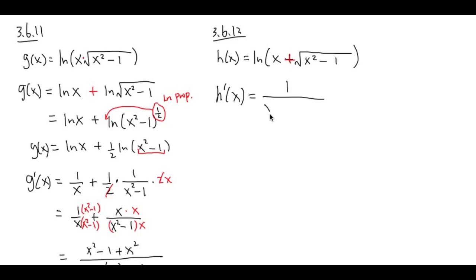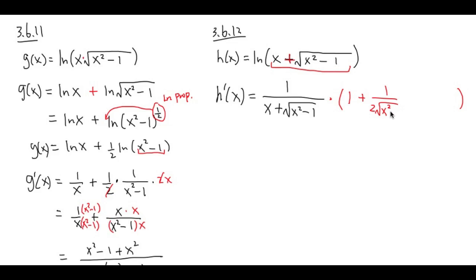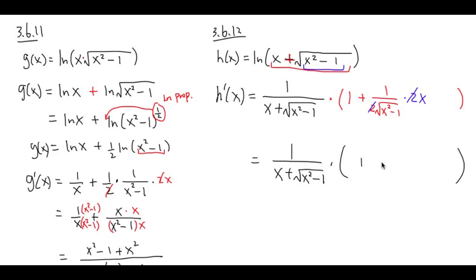The derivative of ln of x plus square root of x squared minus 1 is 1 over (x plus square root of x squared minus 1), multiplied by the derivative of the inside function. Derivative of x is 1, plus the derivative of the square root of x squared minus 1, which is 1/2 times (x squared minus 1) to the negative 1/2, times 2x. The 2's cancel, giving 1 plus x over square root of x squared minus 1. So we have 1 over (x plus square root of x squared minus 1) times that expression.